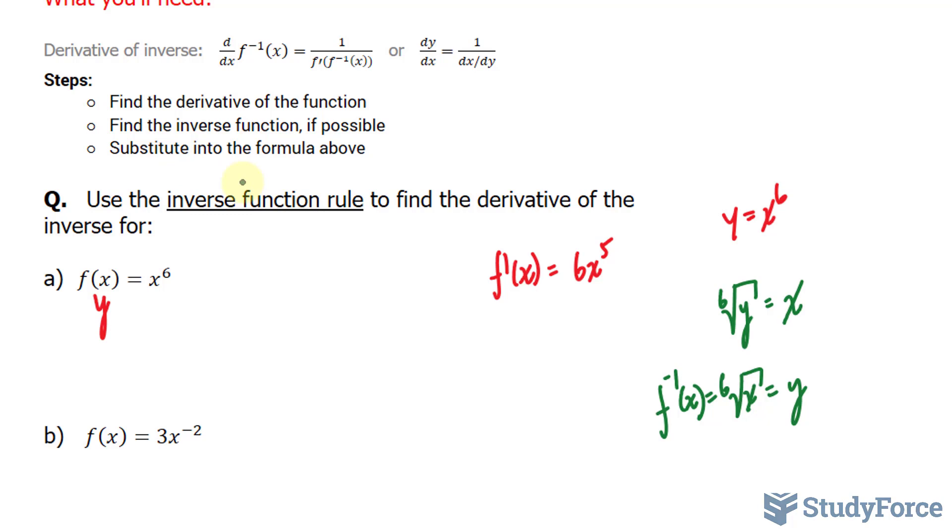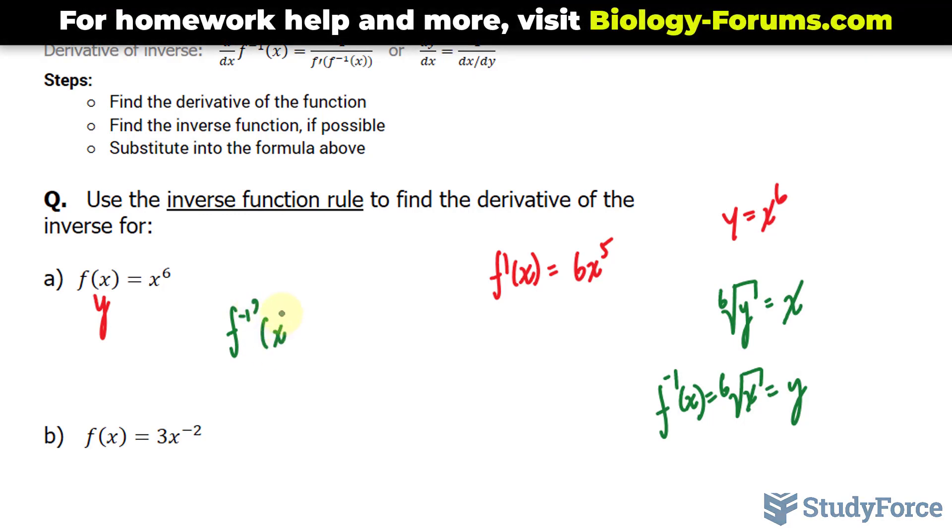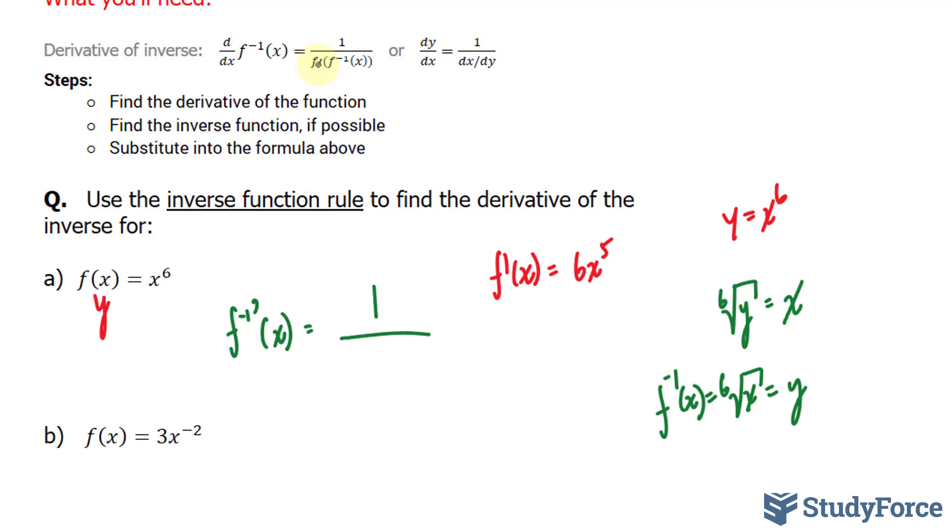Lastly, we have to substitute what we found here into this formula. So we have the derivative of the inverse is equal to 1 over the derivative, which is right here, 6x to the power of 5. And in place of the x for our derivative, we will put in the inverse, which is this part.